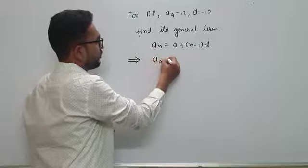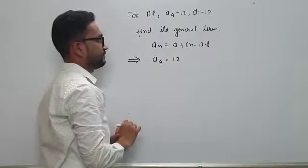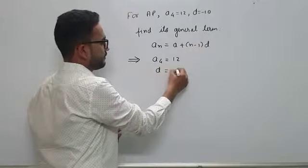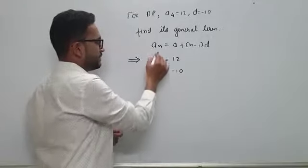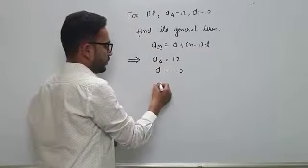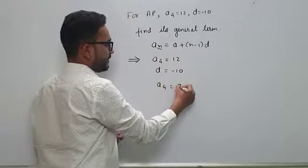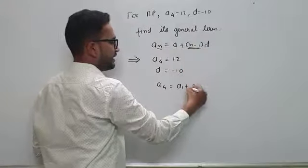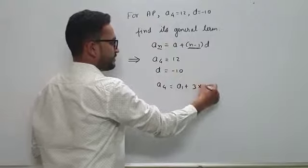They have told us that A4 is equal to 12. Difference, they have told us minus 10. Now, suppose if you put the value of N here as 4, it will become A4 is equal to A1 plus 4 minus 1, that is 3, and difference we have this minus 10.